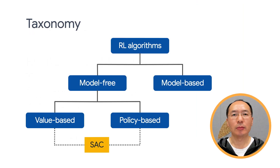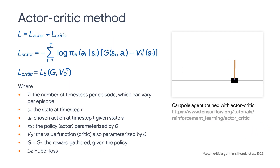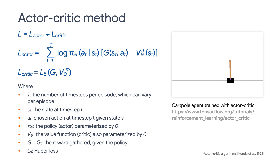Let's first talk a little bit about a new agent, SAC agent, that we're going to use. SAC stands for soft actor critic, and it is a bridge between the value-based methods and the policy-based methods. In the actor critic part, the policy is referred to as the actor that proposes a set of possible actions given a state, and the estimated value function is referred to as the critic, which evaluates actions taken by the actor based on the given policy.